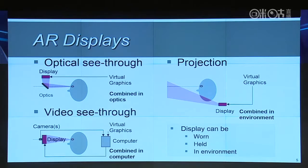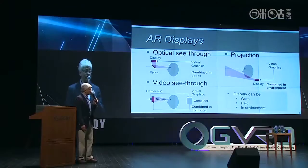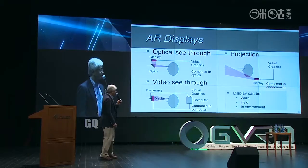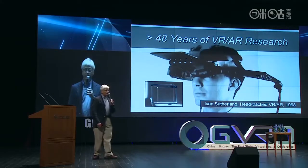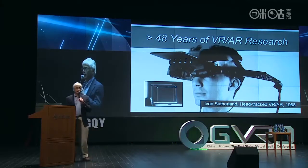In these schematic pictures, I'm leaving out exactly where things really are. The display can be worn as part of a head-worn display, it can be held in the hand as in handheld AR, and it can even involve having some components in the environment. It turns out that AR and VR are actually quite old technology — research goes back around 50 years, starting with Ivan Sutherland's work with his students at Harvard, published in 1968. This is a picture of that very first optical see-through head-worn display.